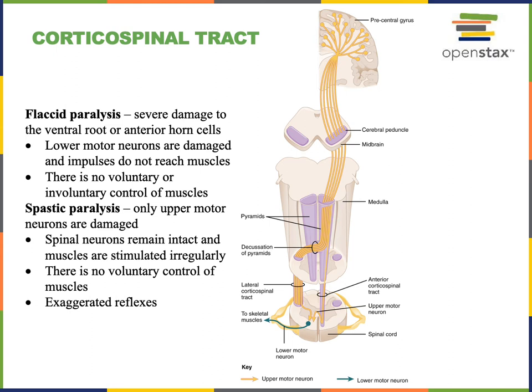These are the somatic efferent fibers of the peripheral nervous system that excite skeletal muscles. The corticospinal tract is formed from two neurons: an upper motor neuron in the brain, and a lower motor neuron that has its cell body in the spinal cord.